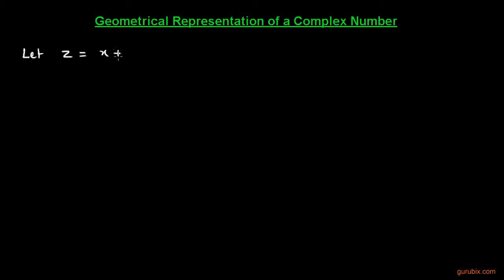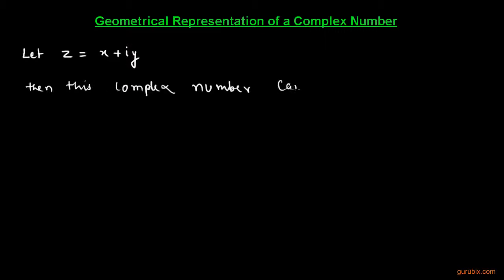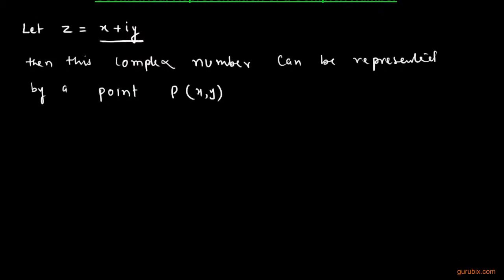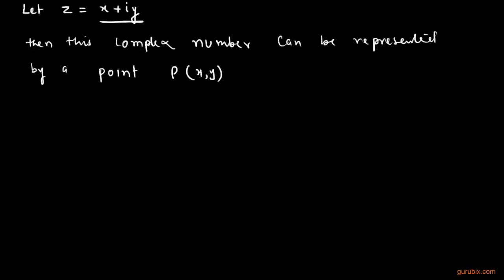Welcome friends. Today we shall learn the geometrical representation of a complex number. This is a very important topic. Suppose we are given a complex number z equals to x plus iota y. Then we can represent this complex number x plus iota y by a point P whose coordinate is x and y.